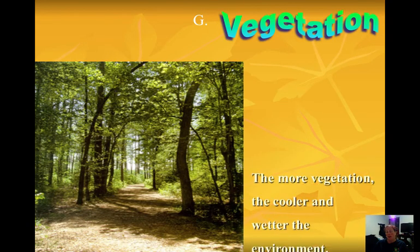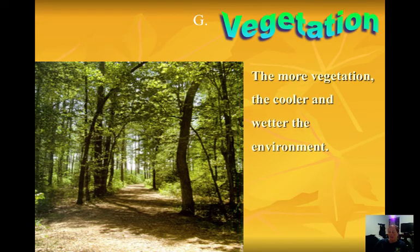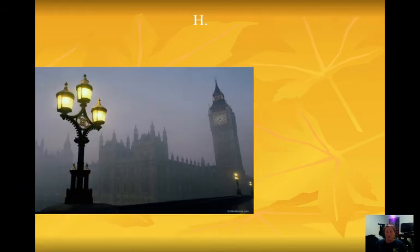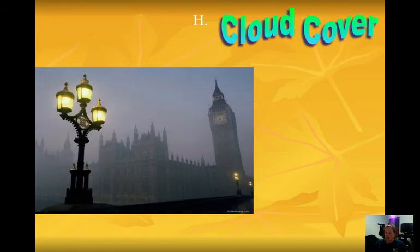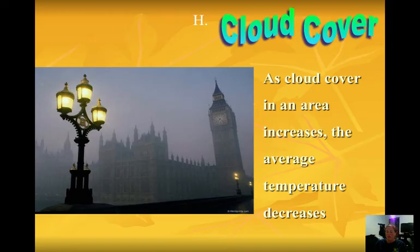The amount of vegetation an area has affects climate — the more vegetation, the cooler and wetter the environment, since most vegetation doesn't thrive in extremely hot or dry conditions. Cloud cover also matters. Areas like Seattle or England are known for heavy cloud cover. More cloud cover means less insolation reaching the surface, causing average temperatures to decrease.